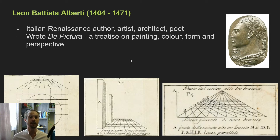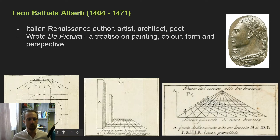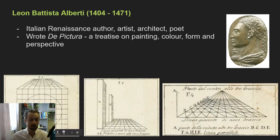We had Leon Battista Alberti, also from the early 15th century. Alberti wrote the text Depitura, which is a treatise on painting, colour, form and perspective. From these diagrams we can see that the basic principles of linear perspective — particularly how to calculate how much smaller things should get as they move further away from the viewer — have been quite specifically formalised. My diagrams later are essentially exactly the same as Alberti's diagrams from 600 years ago.